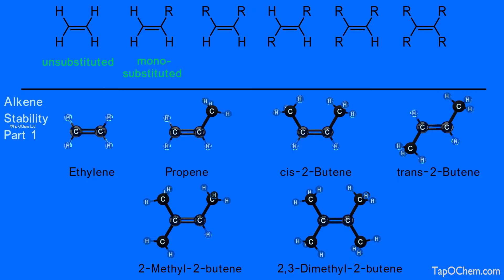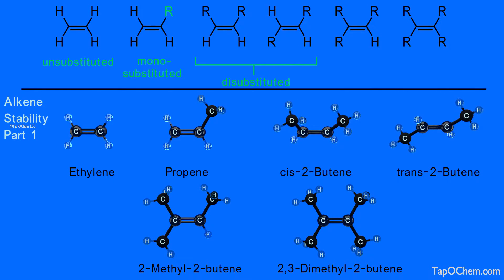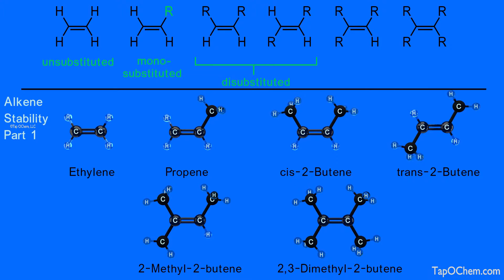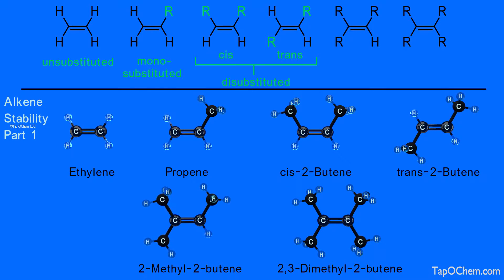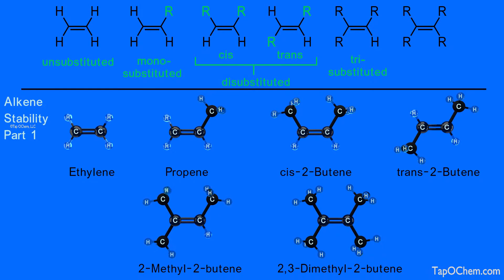Let's turn that R group's color on the top line drawing to green. A disubstituted alkene is one that has two alkyl groups bonded to the carbon-carbon double bond. Cis and trans-2-butene are disubstituted alkenes. Let's turn those R groups' color on the top line drawing to green. 2-methyl-2-butene is an example of a trisubstituted alkene — one that has three alkyl groups bonded to the carbon-carbon double bond. Let's turn those R groups' color to green.